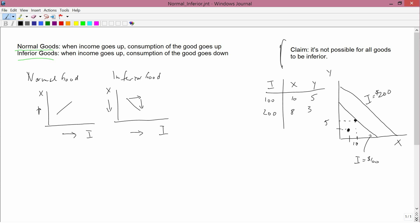The reason why this doesn't make any sense is because you could have afforded the new point even when your income was just $100. It was in the original budget constraint. So if the new point, namely 8, 3, was really better than the original point, namely 10, 5, then why didn't you buy 8, 3 in the first place? You could have afforded it.